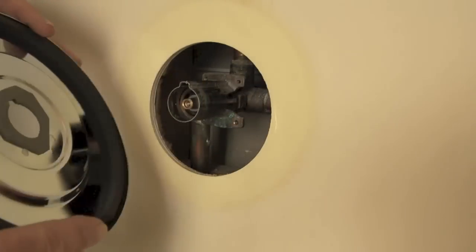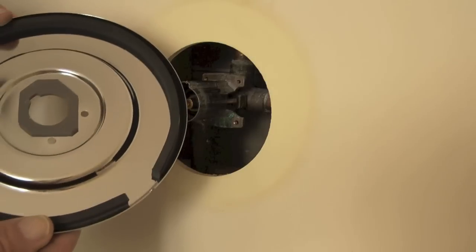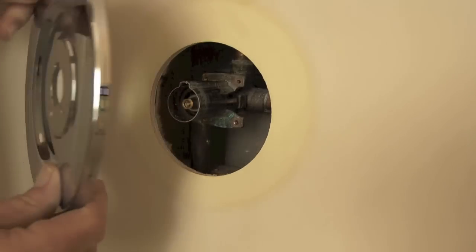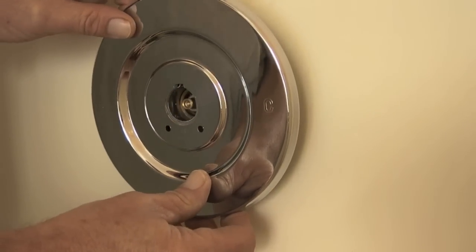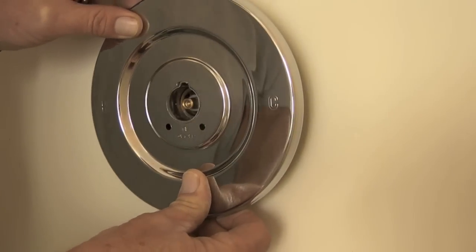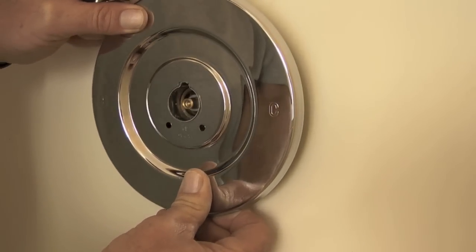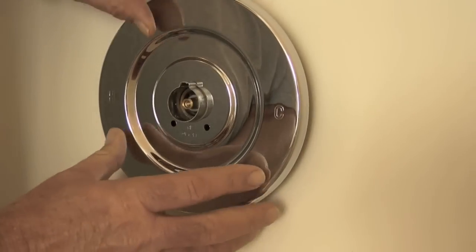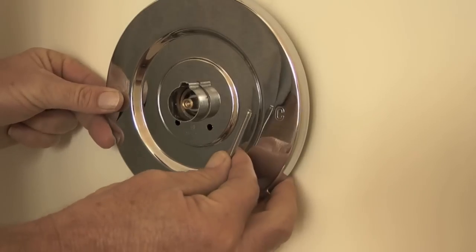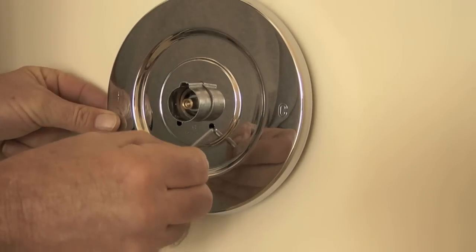This is the new escutcheon. Notice that on the back it has a foam seal. This will keep moisture from getting behind the escutcheon. I will slide it over the stop tube, then line up the holes and reinstall the two screws.